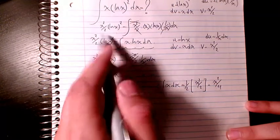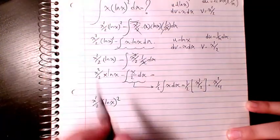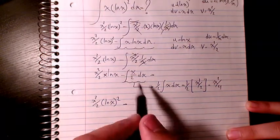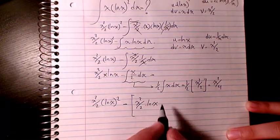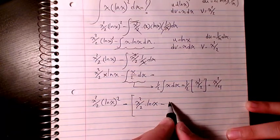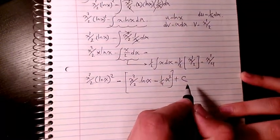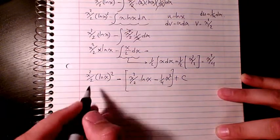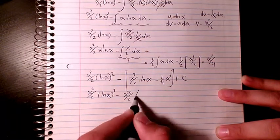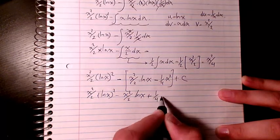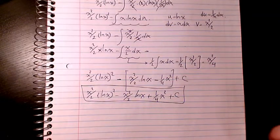So if I put everything together, it's going to be x squared divided by 2 ln x to the power of 2, that's coming from here, minus x squared divided by 2 ln x, minus minus x squared divided by 4, plus c, 1 over 4 x squared plus. So that's the final answer to this question.